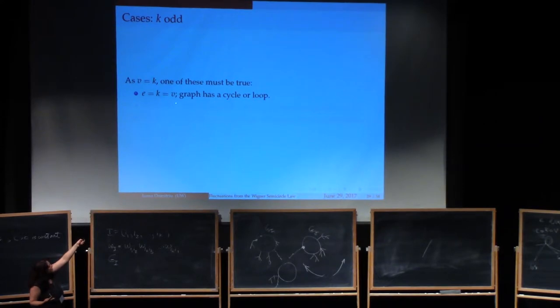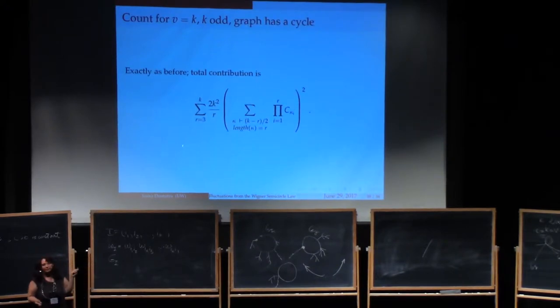So the only possibilities that we have to examine are the case of a cycle or a loop. The case of a cycle is identical to before. It's the exact same count. It's the exact same discussion. And, of course, now you're going to have that instead of summing over even lengths of cycles, now you're going to sum only over odd lengths of cycles. But again, it's okay to express it this way because if you can't do a partition of k minus r over 2, then this term just doesn't appear. So that term we know and we're familiar with.